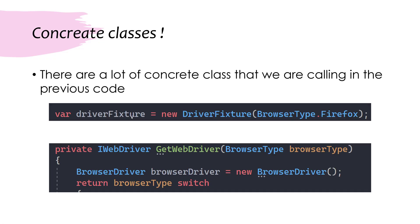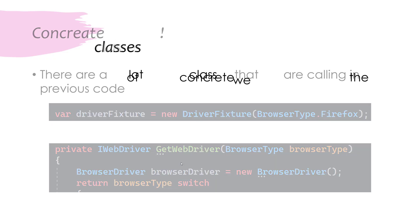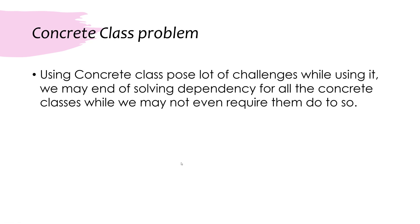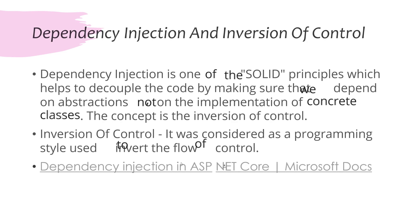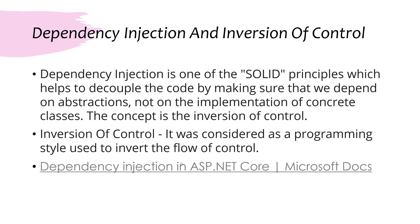We already have two concrete class usages within our code, and using concrete classes will start posing new challenges. We'll be solving this using dependency injection for all the concrete classes. To solve this problem we're going to use what is called dependency injection and inversion of control. Dependency injection is one of the SOLID principles which helps you decouple code by making sure we depend on abstractions, not on the implementation of concrete classes.